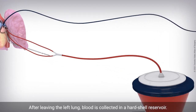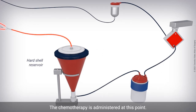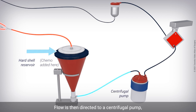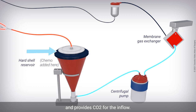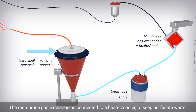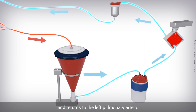After leaving the left lung, blood is collected in a hard shell reservoir. The chemotherapy is administered at this point. Flow is then directed to a centrifugal pump, which drives the flow to a membrane gas exchanger, where a gas combination is added to deoxygenate the perfusit and provide CO2 for the inflow. The membrane gas exchanger is connected to a heater cooler to keep perfusit warm. Perfusit then passes a leukocyte filter and returns to the left pulmonary artery.